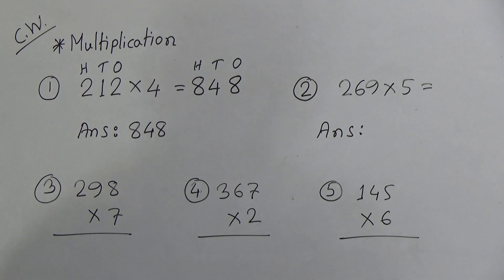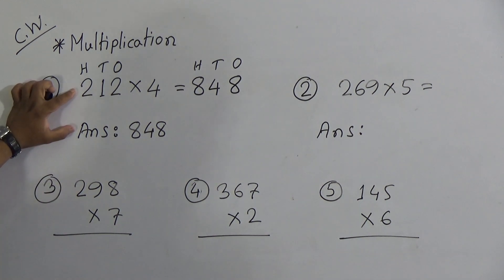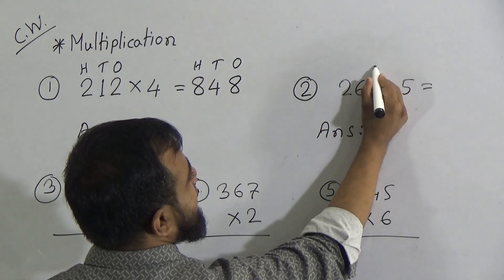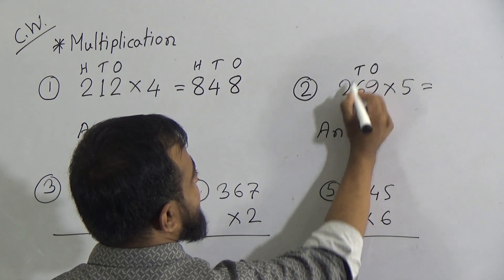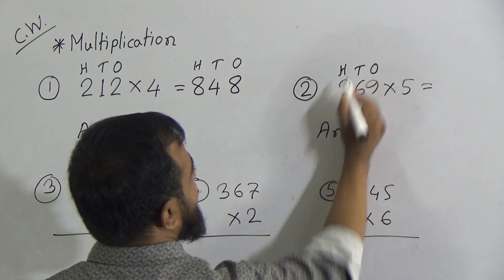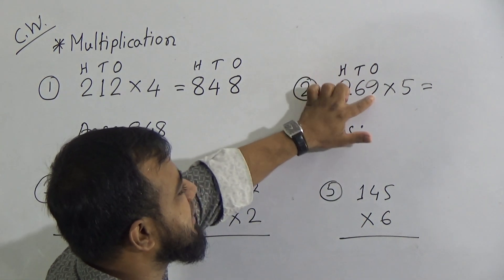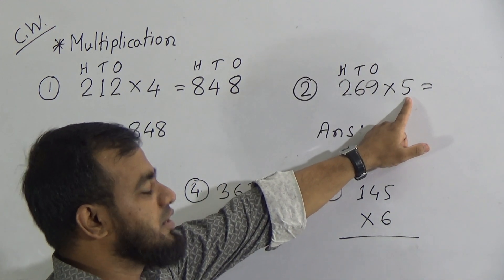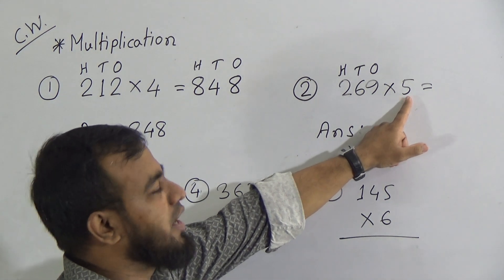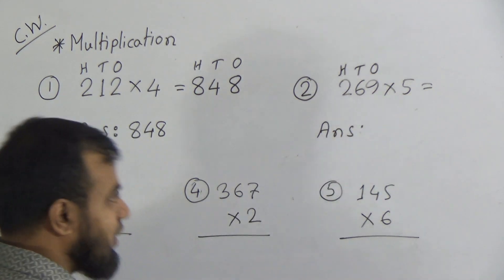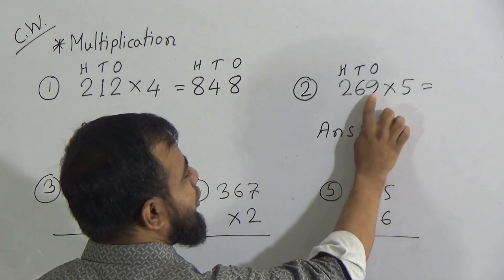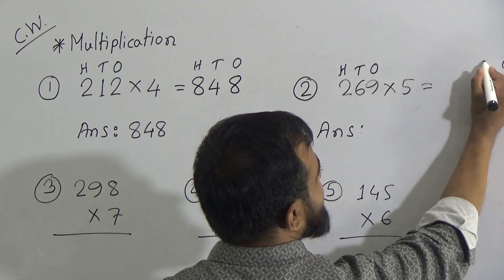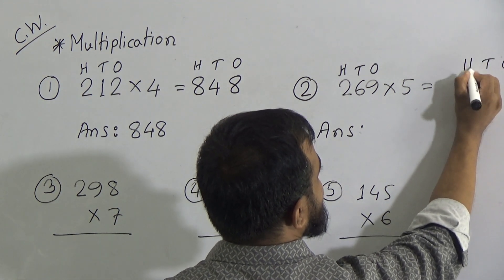Now the next one — number 1 was without carrying, but number 2 is with carrying. Look at number 2 very carefully. This 9 is in the 1's place, this 6 is in the 10's place, and this 2 is in the 100's place. This number is 269, which needs to be multiplied with 5. We need to use the times table of 5. First, we multiply 5 with the 1's place, 9, and write the result in the 1's place.